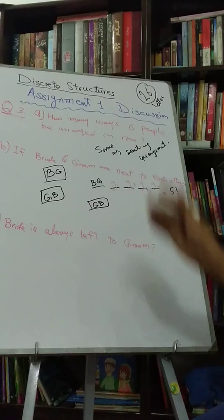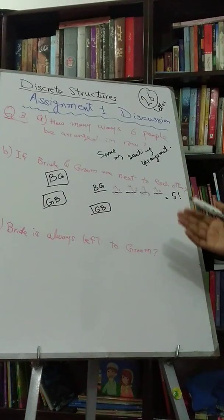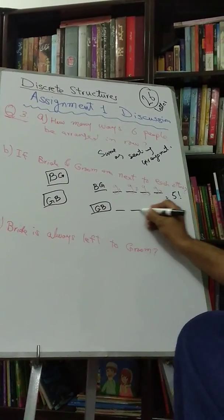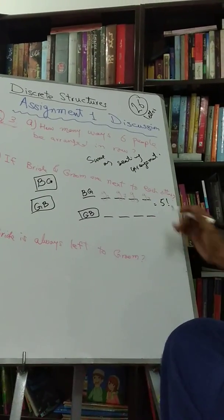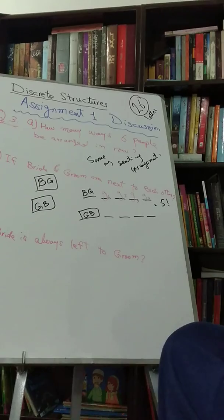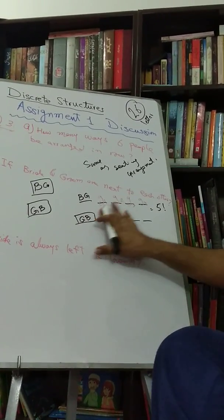Like groom is standing on the left and bride is standing on the right. So then in how many ways we can arrange these people? So G and B could be here or here, here, here, here. It could be any of the five positions.